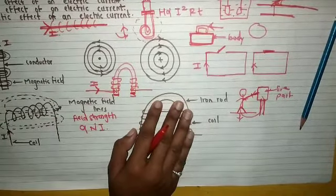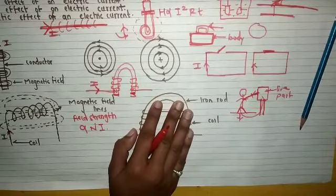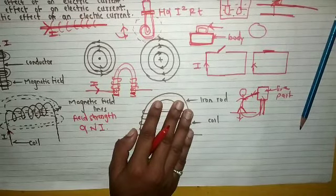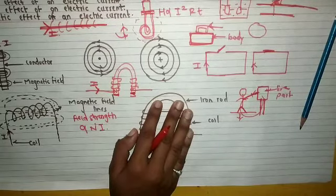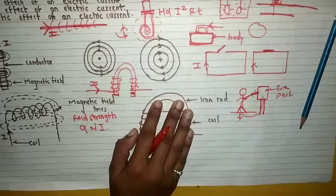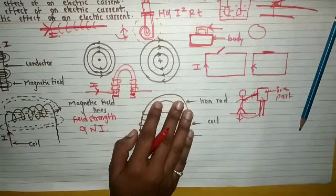The magnetic effect of electric current is also used in the following equipment: fans, belts, and transformers. We are going to learn this in further lectures.